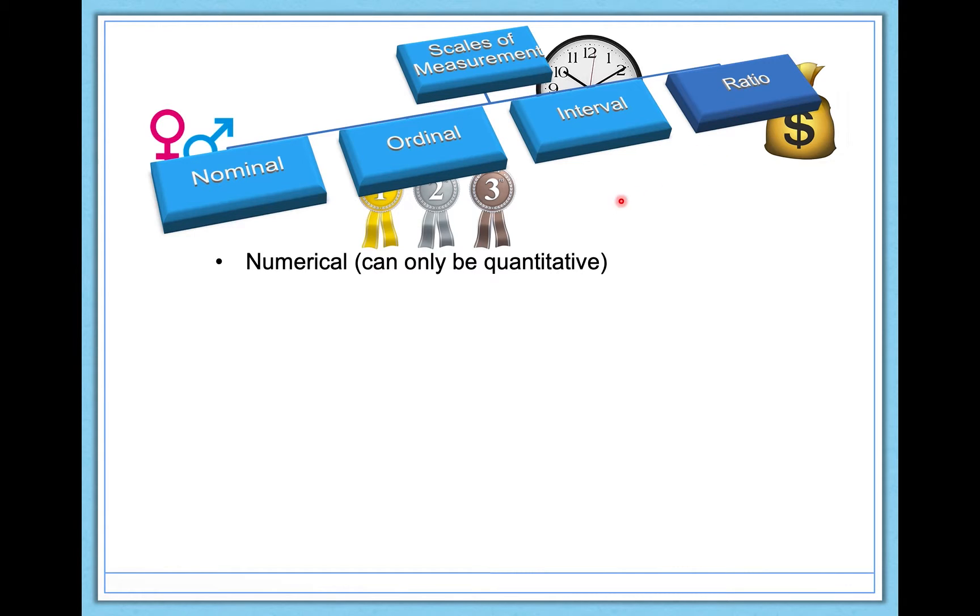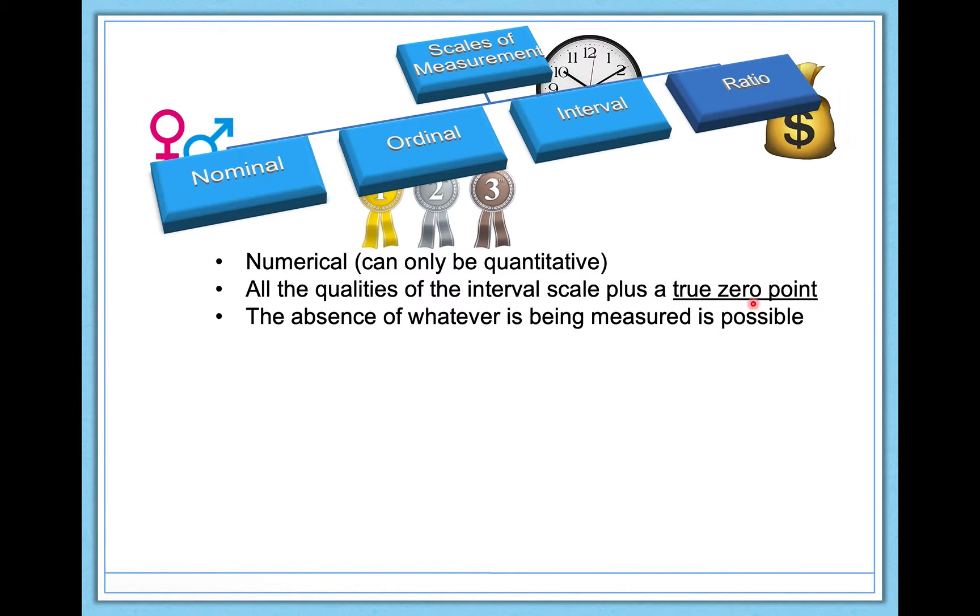Let's talk about ratio. Ratio is going to be numerical—only numbers, no words. Again, everything builds on what came before it. It has all of the properties of the interval scale of measurement, plus that true zero point I was just hinting at with degrees Kelvin. And what this true zero point means is that the absence of whatever is being measured has to be possible.